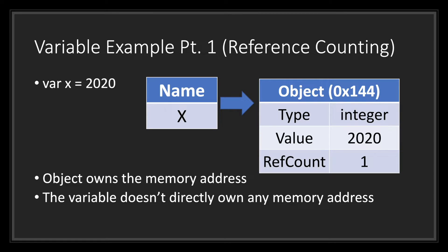Let's look at how Godot handles the execution of this line of code. We have a variable X which equals the literal integer 2020. What Godot does is: it creates an object, sets the type to integer, sets the value to 2020, creates a name called X, points X to the new object, and then increases the object's reference count by 1.